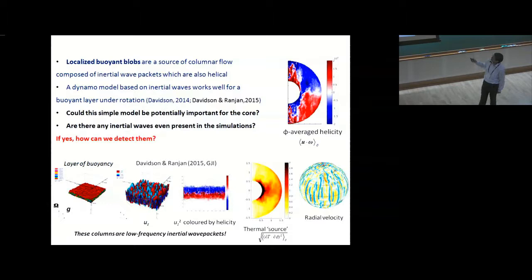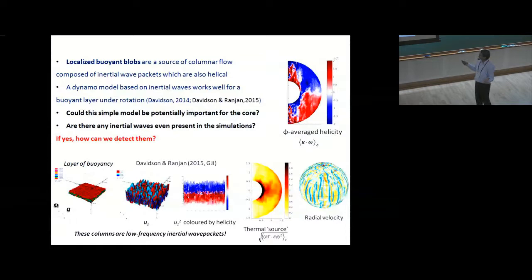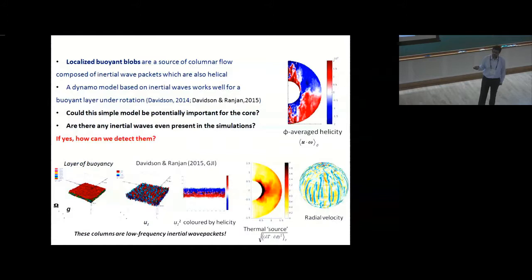Despite the differences, it is quite interesting to make the analogy. The flow here shows UZ with alternating negative and positive values — alternate cyclones and anticyclones — and that is exactly what is observed in the velocity field in dynamo simulations as well. But there are very strong differences in the type of flows and forces.